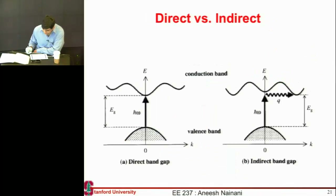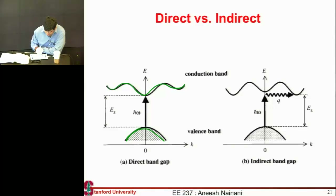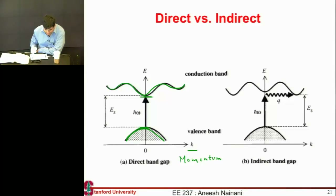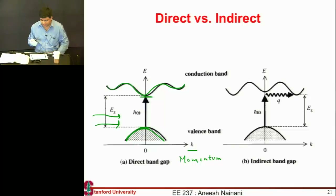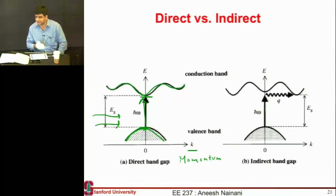In a direct band gap material, the valence band maximum is exactly aligned with the conduction band minimum in K-space — think of K-space as crystal momentum. So these two energy levels occur at the same momentum. Whenever there is an incoming photon, it has a lot of energy but essentially no momentum, and it can still cause the transition of the electron from valence band into the conduction band because they are aligned in the same momentum space.